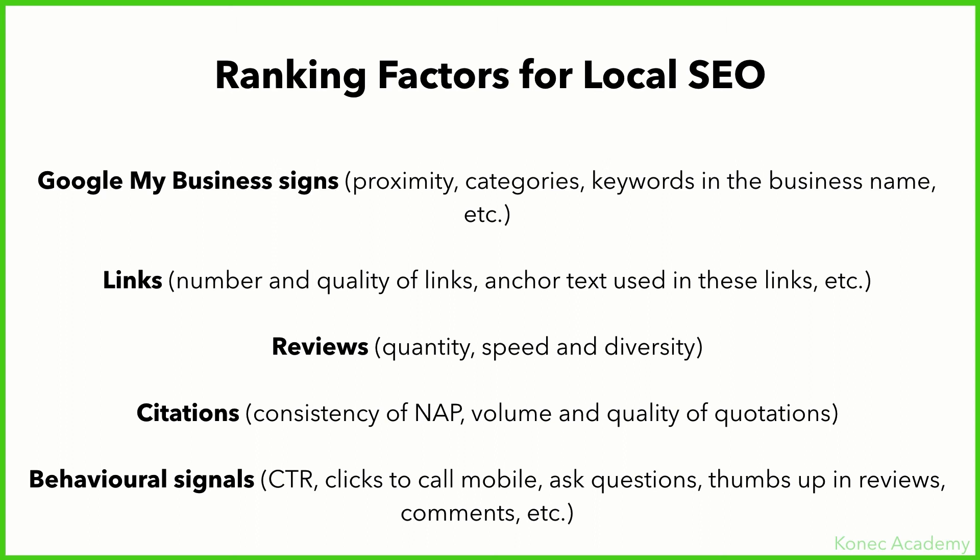Then citations — when you're creating citations, which are basically business listings, you need to be consistent with your NAP. NAP means Name, Address, and Phone number. The volume and quantity of citations also matters. Then we have behavioral signals, which include CTR — click-through rate — and clicks to call on mobile, because if you're searching on mobile you can click an icon on the listing that directly calls the business.